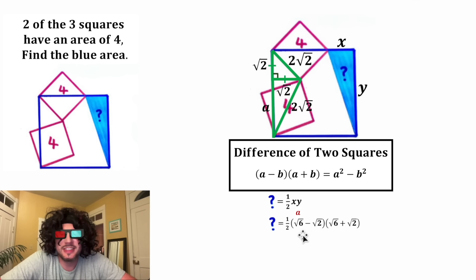If we let this equal a and this equal b, we have a minus b times a plus b. And that'll give us a squared minus b squared. Or in this case, root six squared minus root two squared.